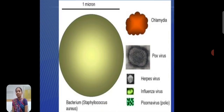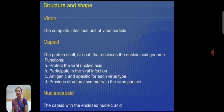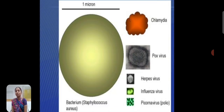This image represents the size of viruses compared to bacteria. The example bacterium is Staphylococcus aureus, compared to virus cells. Examples for viruses include poxvirus and herpes virus.